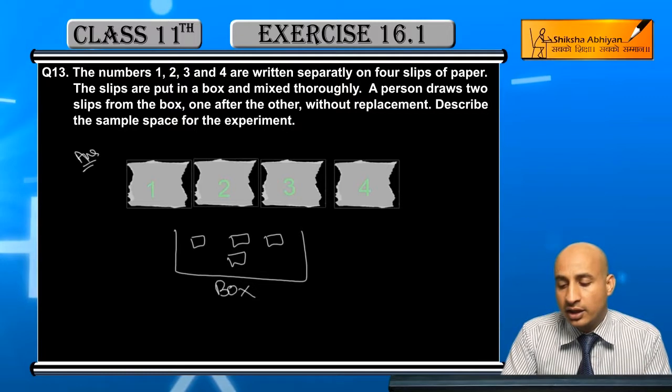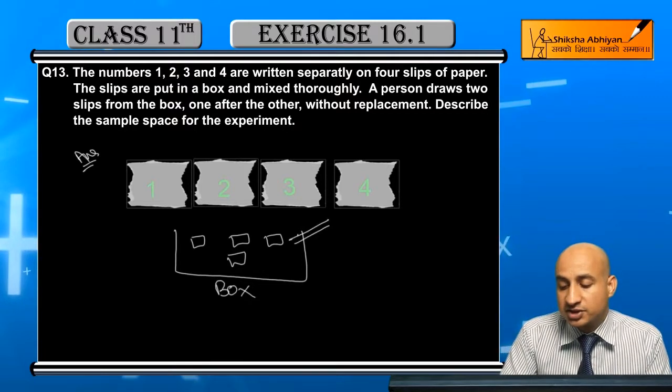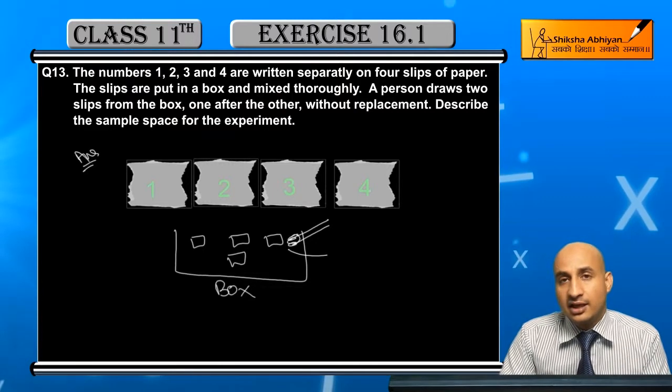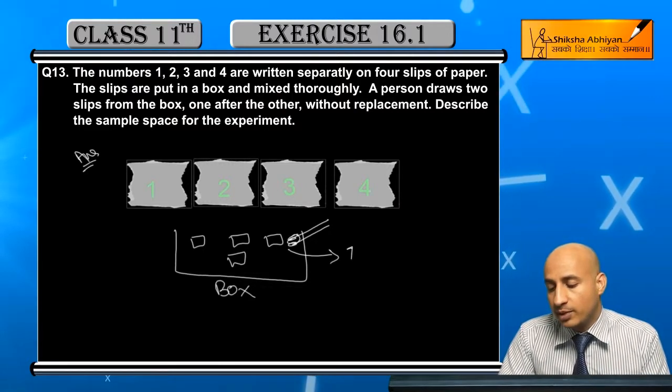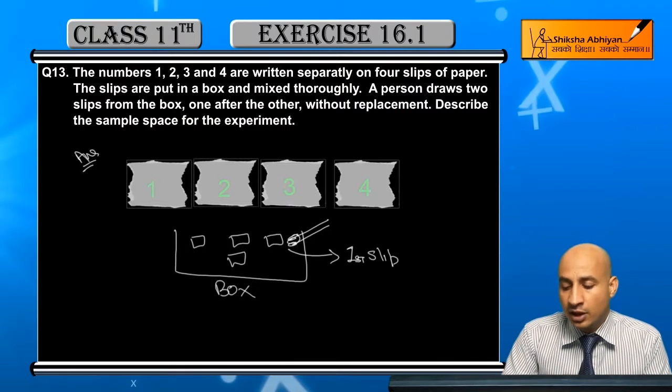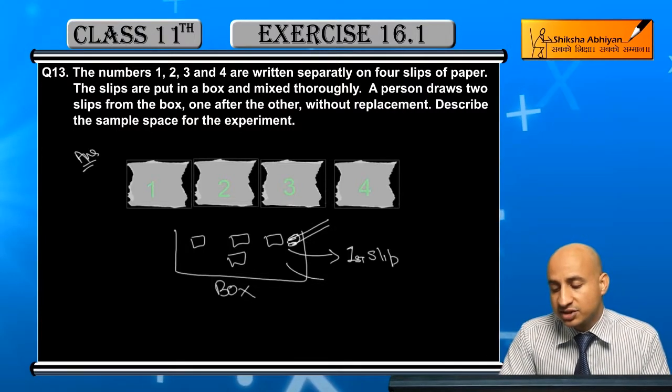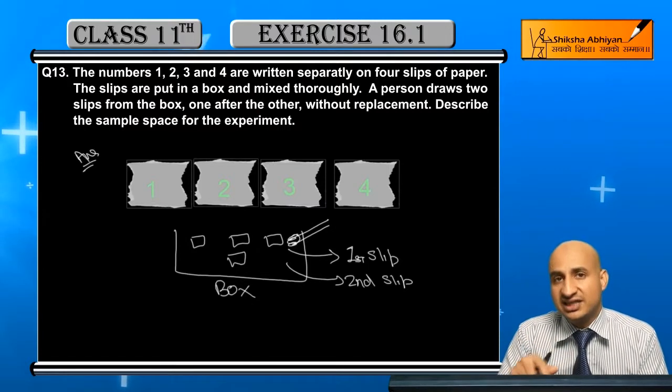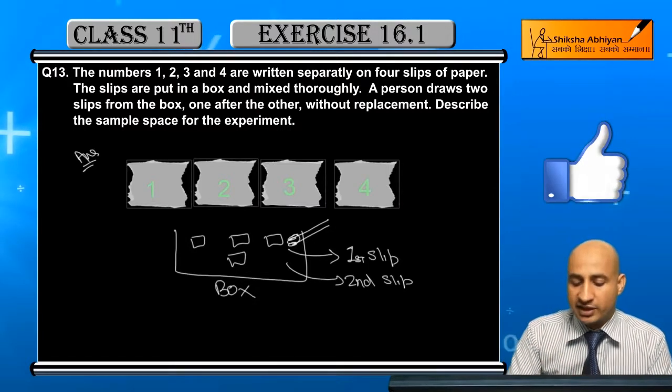Now one person draws the first slip. After the first slip, this is the first slip, not one number but the first slip. What does it do? It draws the second slip. The second slip is left.